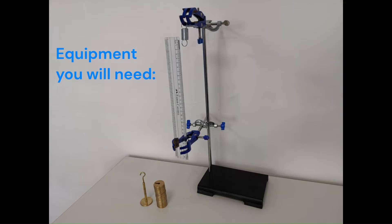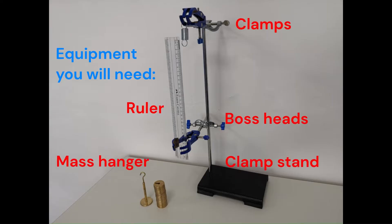Let's start by looking at the equipment we need. We have a clamp stand, clamps, boss heads, a spring, a set of masses, a mass hanger, and a ruler.